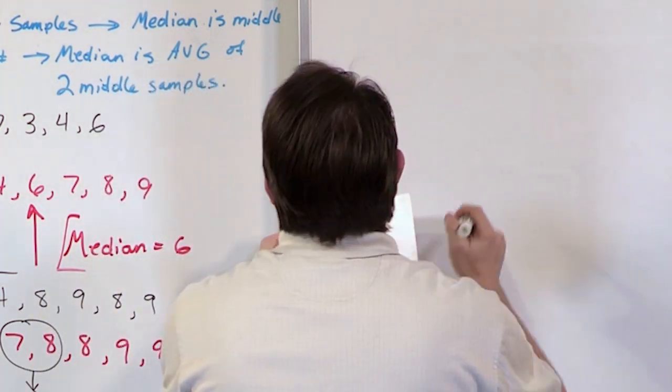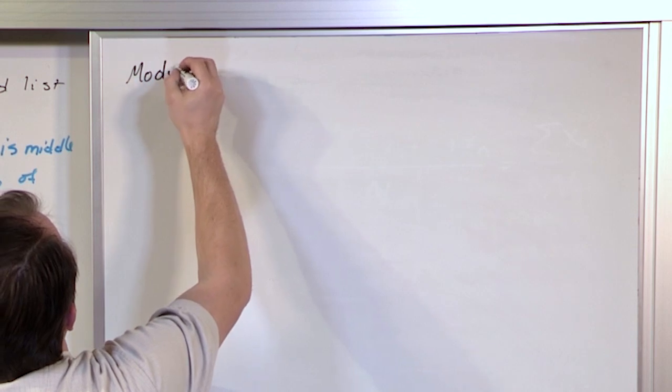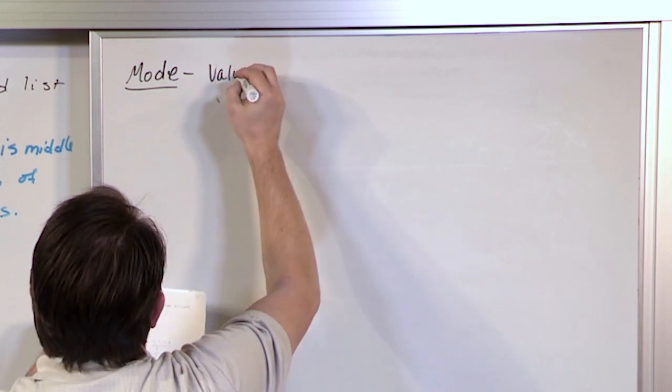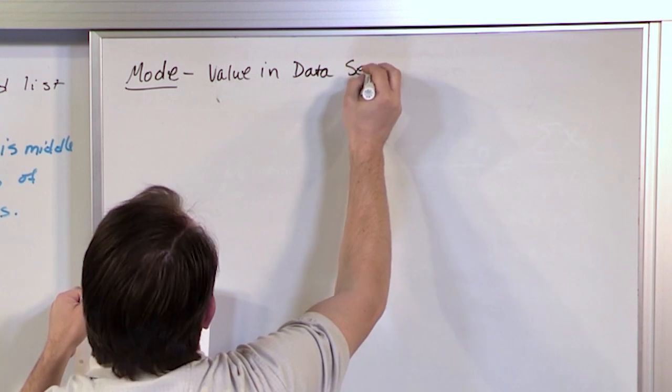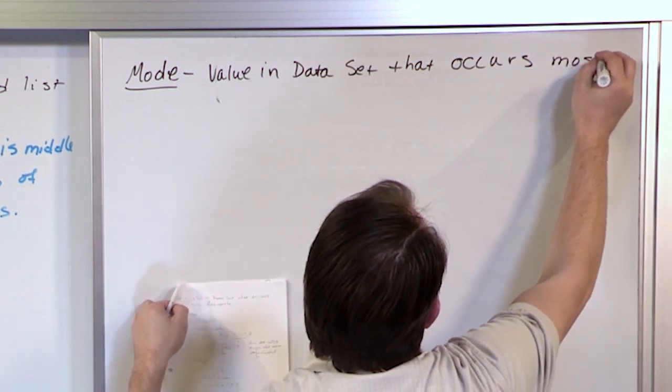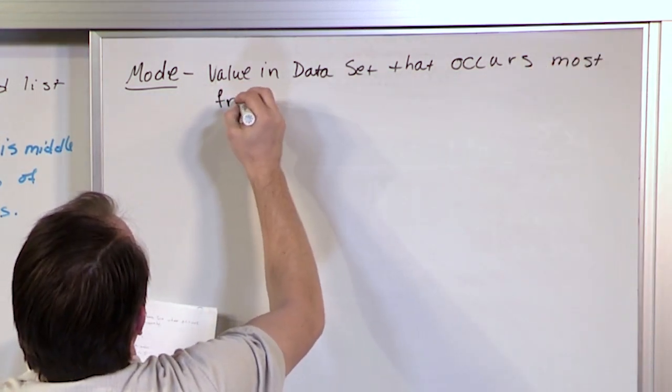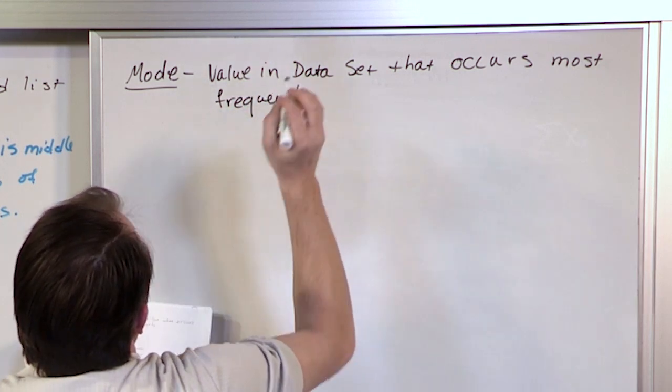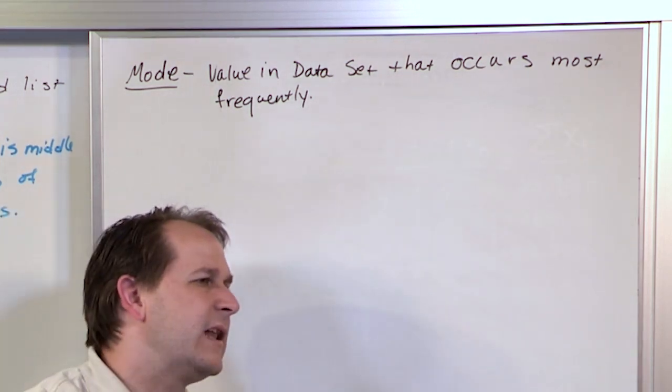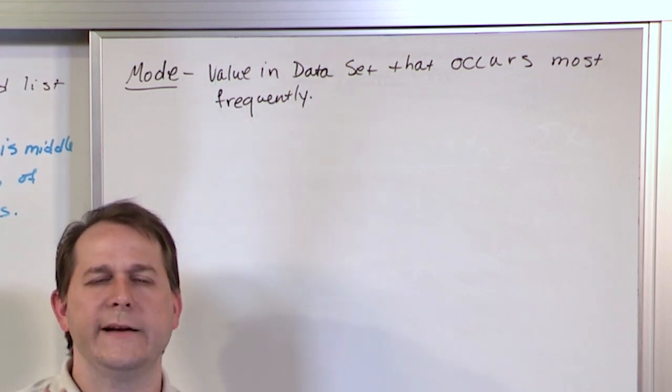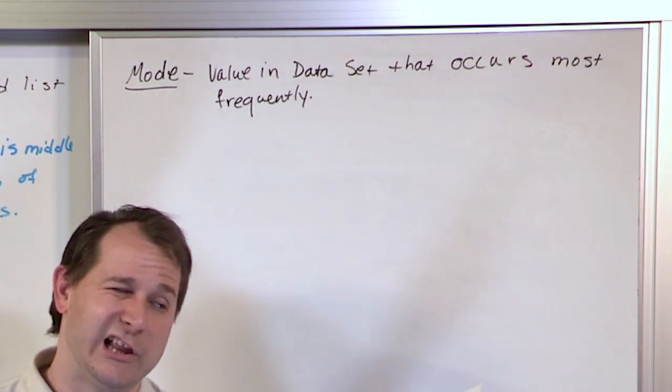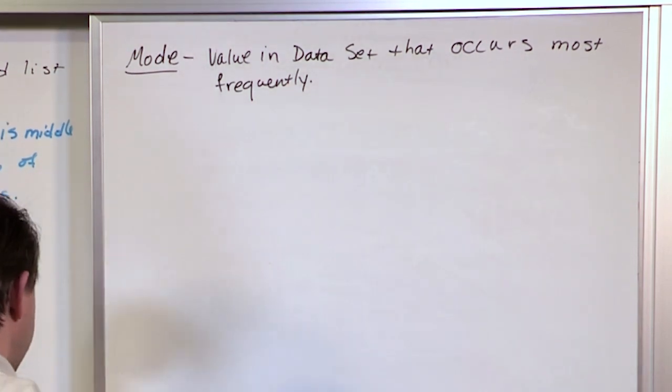All right, finally, we want to discuss something called the mode of a set of data, which is something that's occasionally used. It is just simply the value in the data set that occurs most frequently. All right, so the one that occurs most frequently. This would be very useful if you had a data set with lots and lots and lots of values near a certain range. Then if you're trying to find that representative number that correctly describes and represents your data set, maybe a mode might make more sense if you had a lot of repeated values. It just depends on what you're trying to do.